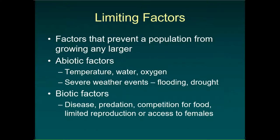Limiting factors are those things within an animal's habitat that prevent the population from growing out of control. They're typically broken down into abiotic factors — non-living things — and biotic factors, which include things like predation from other organisms or competition for food, whether that's plants for herbivores or available prey items for carnivores.